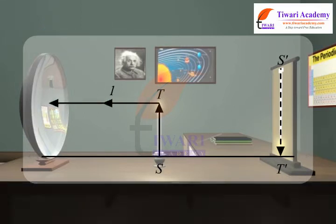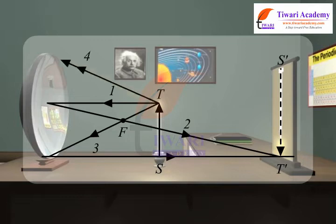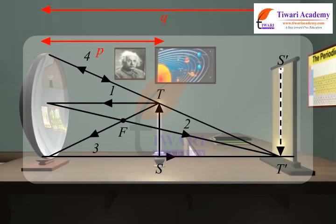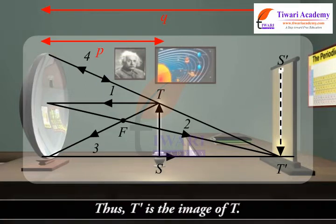Consider four light rays emanating from the tip T of the object which strike the mirror as shown in the figure. It can be seen that the reflected rays all come together at some point T1. Thus T1 is the image of T.